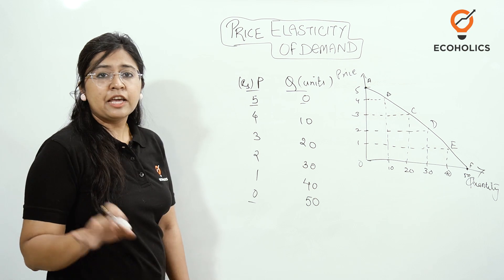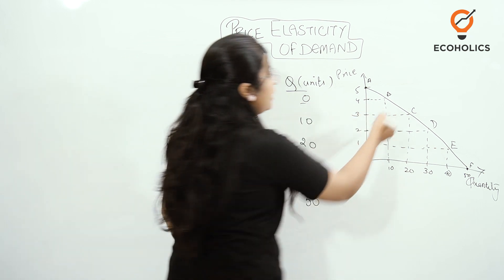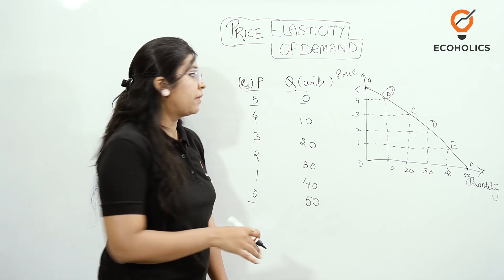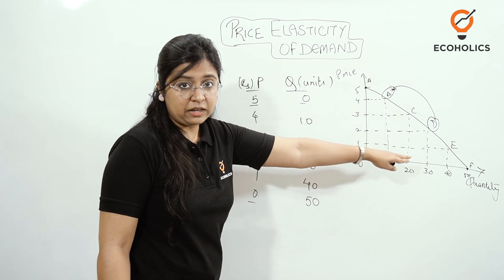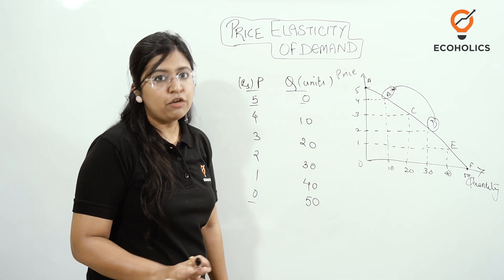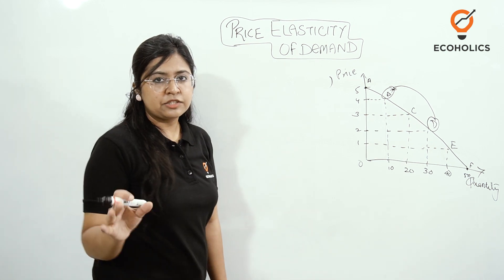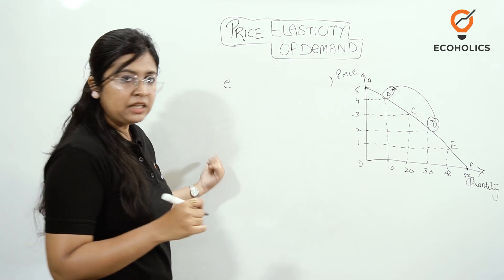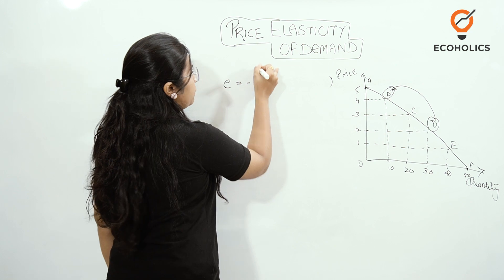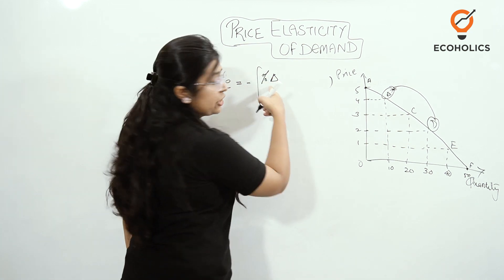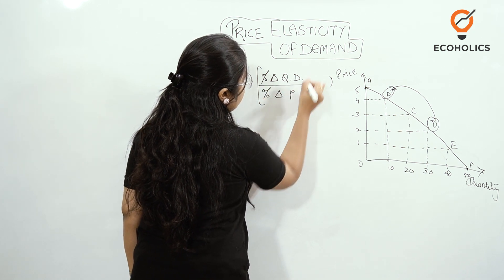Now, if we want to identify the price elasticity of demand — for instance, if I was originally at point B and then moved to point D — what has been the price elasticity of demand from B to D? We are going to write it in the form of a formula. We identify price elasticity of demand with the symbol E. E is equal to minus, where the minus sign represents the inverse relationship between price and quantity demanded. Then in brackets: percentage change in quantity demanded divided by percentage change in price. This is the formula.